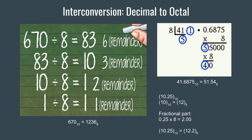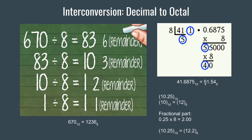Now we take only the decimal part after the point. So 0.5 multiplied by 8 gives 4.0. Since we have obtained a perfect 0 after the decimal point, we do not proceed any further. If you do not get a perfect 0, just make 5 to 6 multiplications with 8 and then terminate. The fractional part gives us 5 and 4, taken top to bottom, so 5 comes first and then 4. Therefore the entire octal number for 41.6875 decimal is 51.54.